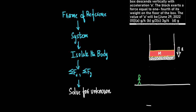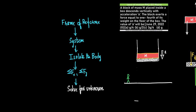So the steps are: frame of reference, determine the system, isolate the body, draw the free body diagram, find sigma Fx and sigma Fy, and solve for the unknown.